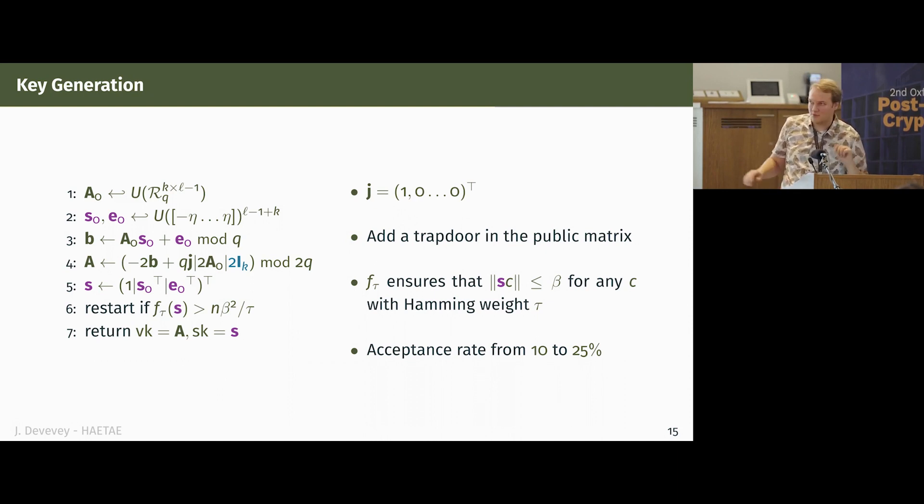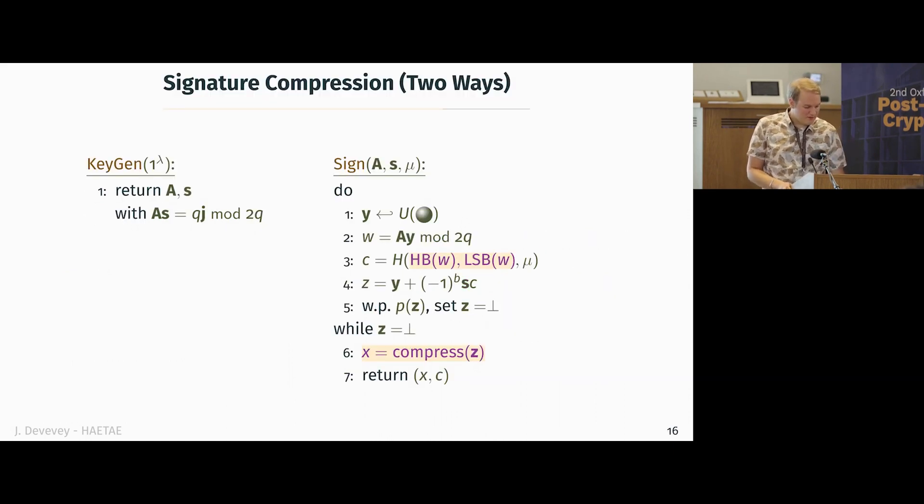There are two points I want to draw your attention on in this key generation algorithm. The first one is the fact that we have A that is in almost HNF form, except that instead of identity, we have two times identity. This will come back to haunt us later on. And the second thing is that we have a rejection step on line six. The function F-to-w is something that depends on the canonical embeddings of S, and it's really tailored to have a fine-grained control on the norm of S times C. So we can change the acceptance rate and it compensates for the previous increase in the entropy, but it also allows us to make this norm much lower than it would be if we didn't have this step.